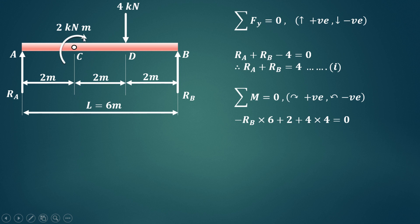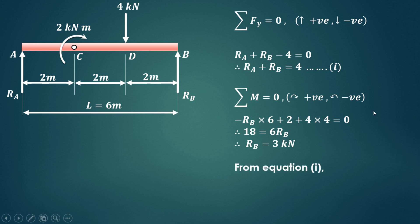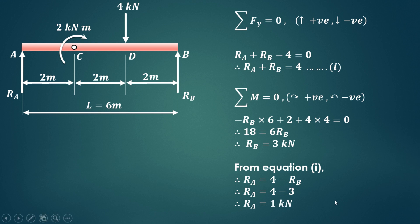The external moment of 2 kNm is clockwise, so we add plus 2. The 4 kN point load creates a clockwise moment with a perpendicular distance from D to A of 2 plus 2 equals 4, so it is 4 into 4. Solving gives 18 equals 6 Rb, so Rb equals 3 kN. From equation 1, Ra equals 4 minus Rb, therefore Ra equals 1 kN.